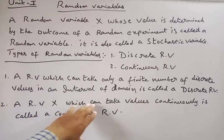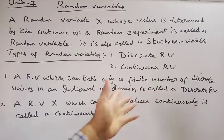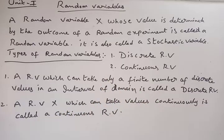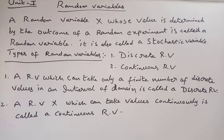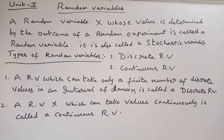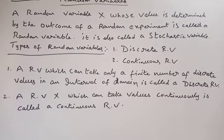A random variable capital X which can take values continuously is called a continuous random variable. This covers the definition of random variables and types of random variables. Next, we have the probability mass function definition.